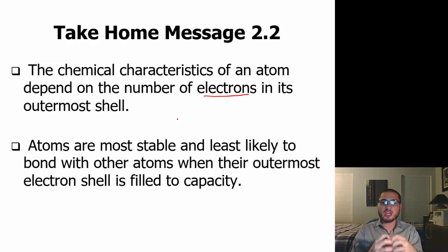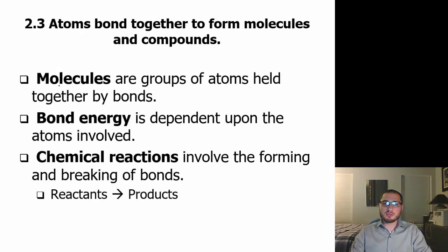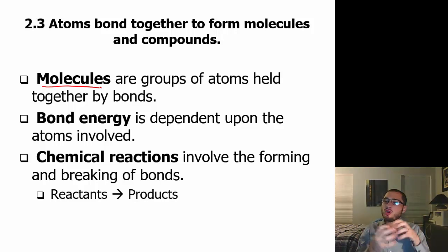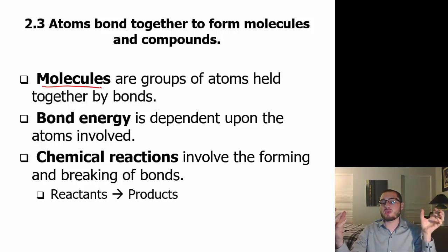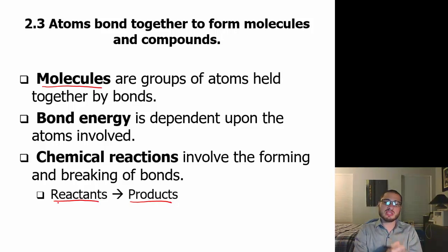Atoms are most stable and least likely to bond with other atoms once that outermost electron shell is filled to capacity. Once those vacancies are filled, it becomes more stable and less reactive and less willing to bond with other elements. Molecules are groups of atoms — hydrogen isn't going to stay pure hydrogen; it wants to bond with other things and create a molecule. Bond energy is really dependent upon the atoms involved. In chemical reactions, you always have the reactants on one side and the products on the other — reactants are what you start with and products are the end result.